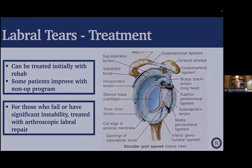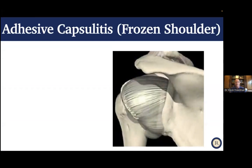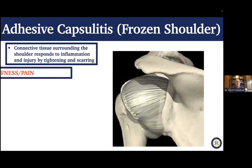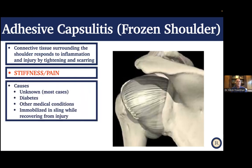Adhesive capsulitis or frozen shoulder: the connective tissue surrounding the shoulder gets inflamed and responds by tightening and scarring down. Patients complain of stiffness and pain — before the shoulder freezes, sometimes just pain; once it does freeze, stiffness is the most significant complaint. Causes are often unknown — this is idiopathic. Certain medical conditions like diabetes or thyroid disease can predispose to it, and immobilization after injury, if prolonged, can lead to a frozen shoulder.